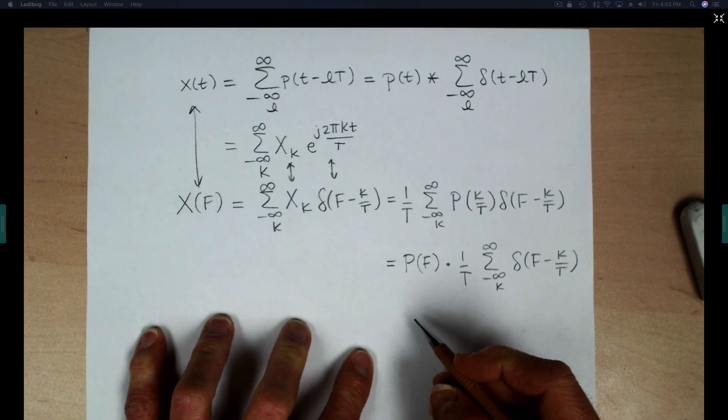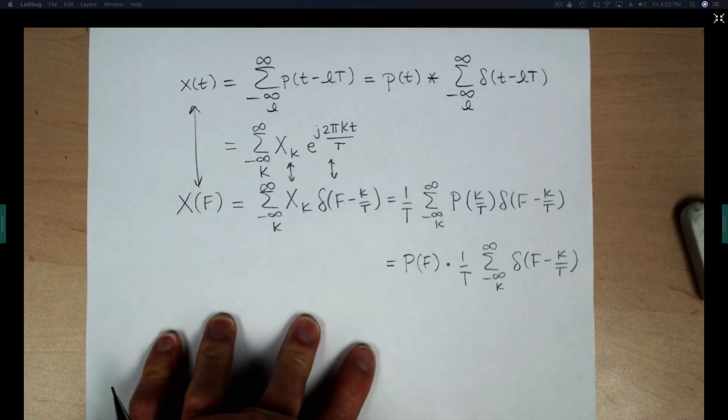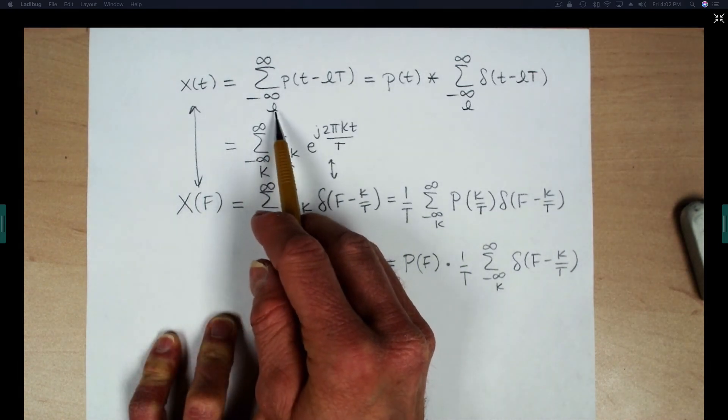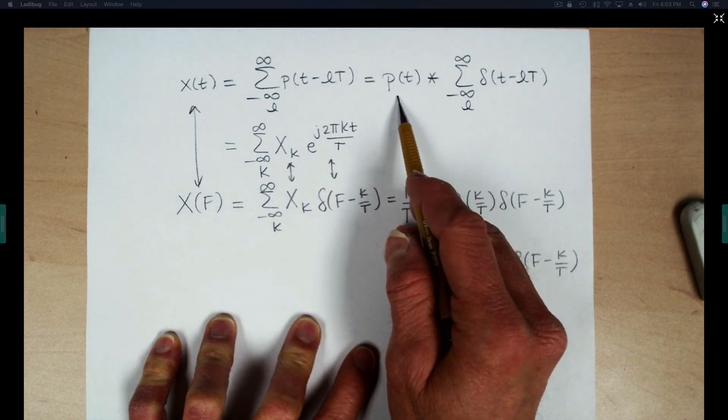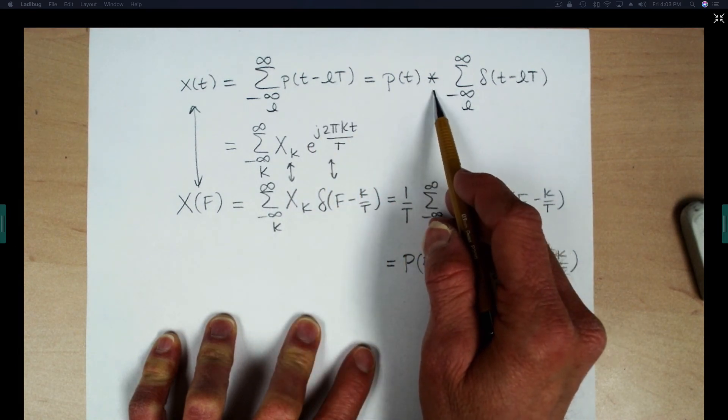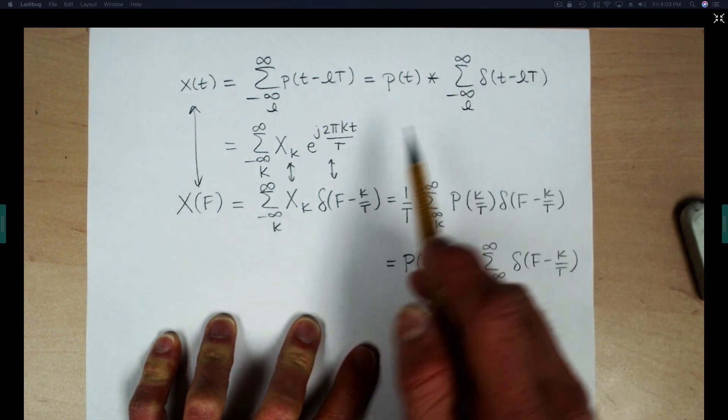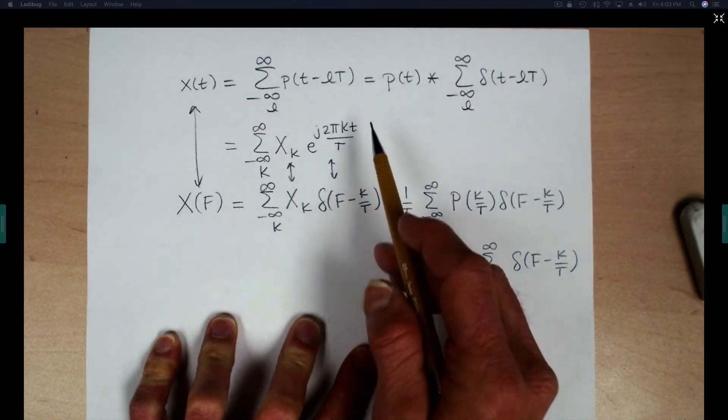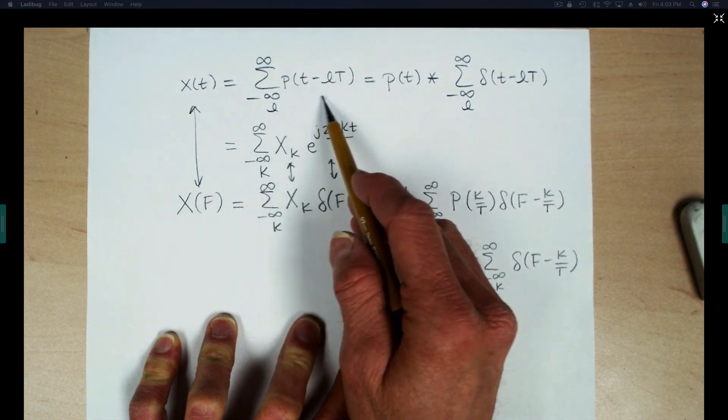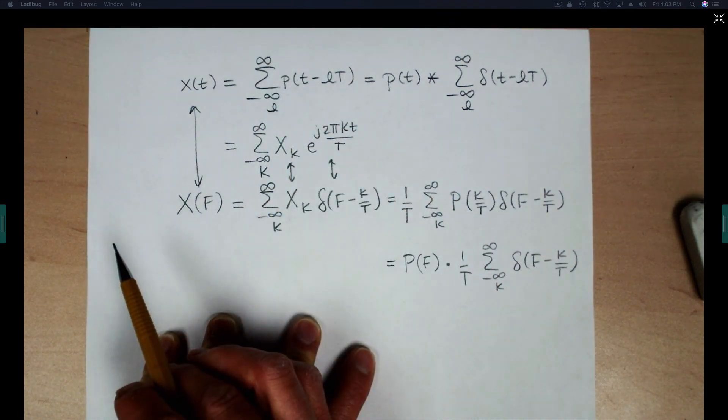But what's interesting here is to recognize another property of the continuous time Fourier transform appearing here. Notice that we could write this pulse train as the basic pulse P of T convolved with an infinite train of impulses, periodic train of impulses. That's one way we could think about producing this periodic train of pulses.